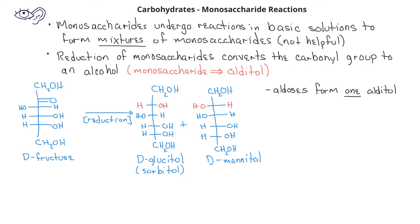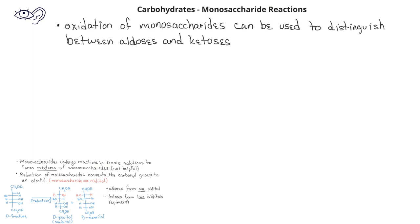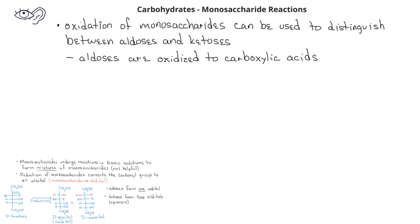However, ketoses will form two alditols, since when the ketone is reduced, we have an asymmetric carbon that can have the hydroxyl group on either side of the Fischer projection. Oxidation of monosaccharides can be used to distinguish aldoses from ketoses. When an aldose is oxidized, the aldehyde functional group is oxidized to a carboxylic acid. However, a ketose cannot be oxidized because the ketone is not available to be oxidized.